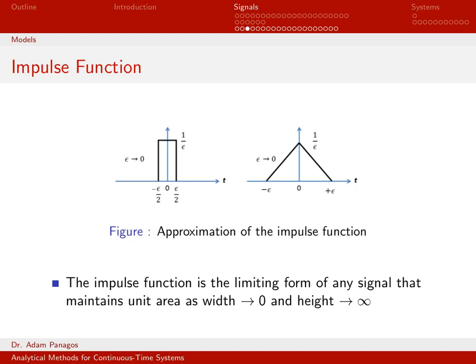That really wraps up the key definition of the impulse function. It is a continuous time function that is zero everywhere, but infinitely tall at time zero with infinitely small width, and it has the property that if you integrate across it, you get one. The next few slides will explore some properties of the impulse function and also what happens if you have a continuous time function and multiply it by an impulse function.